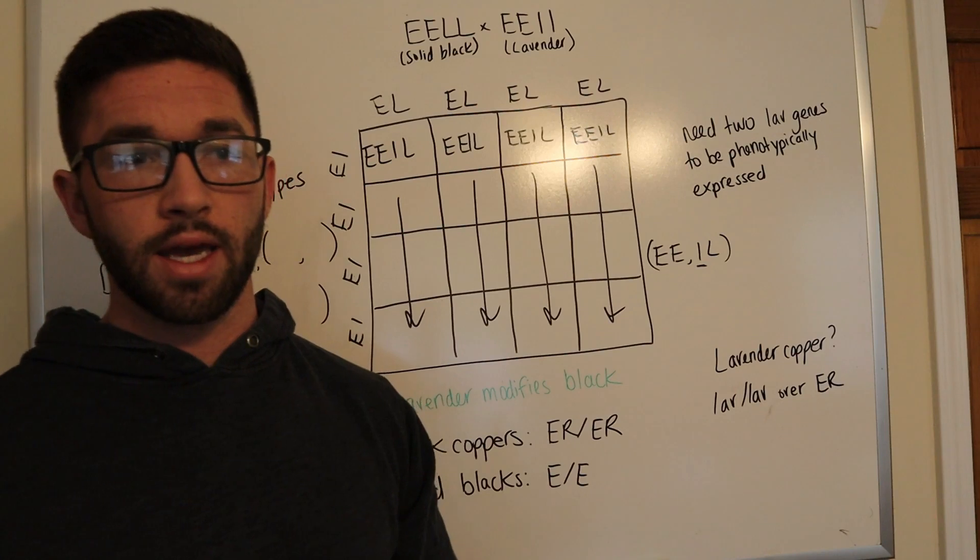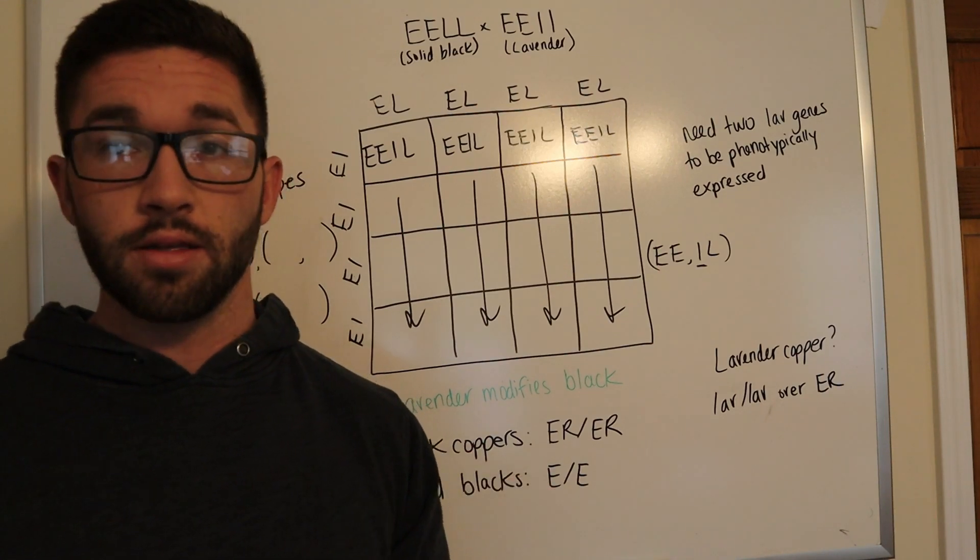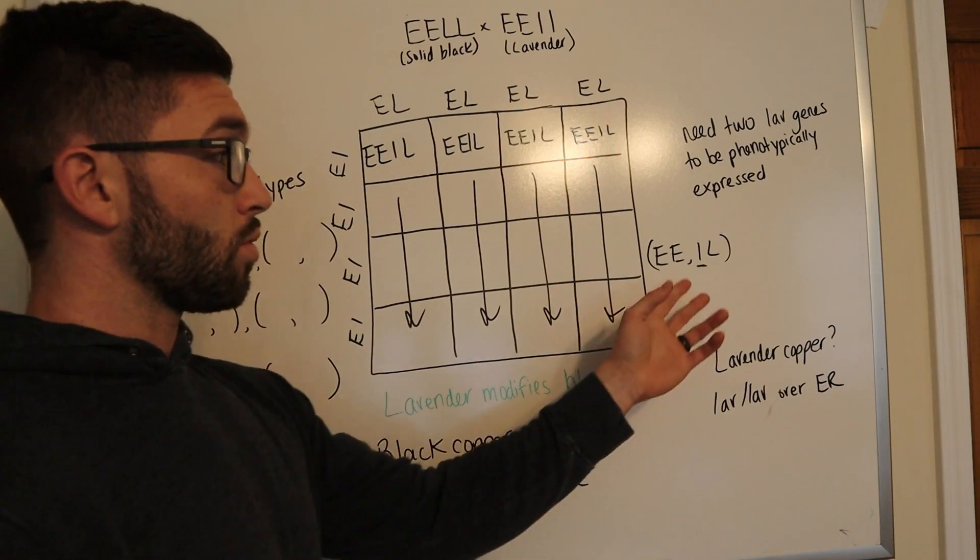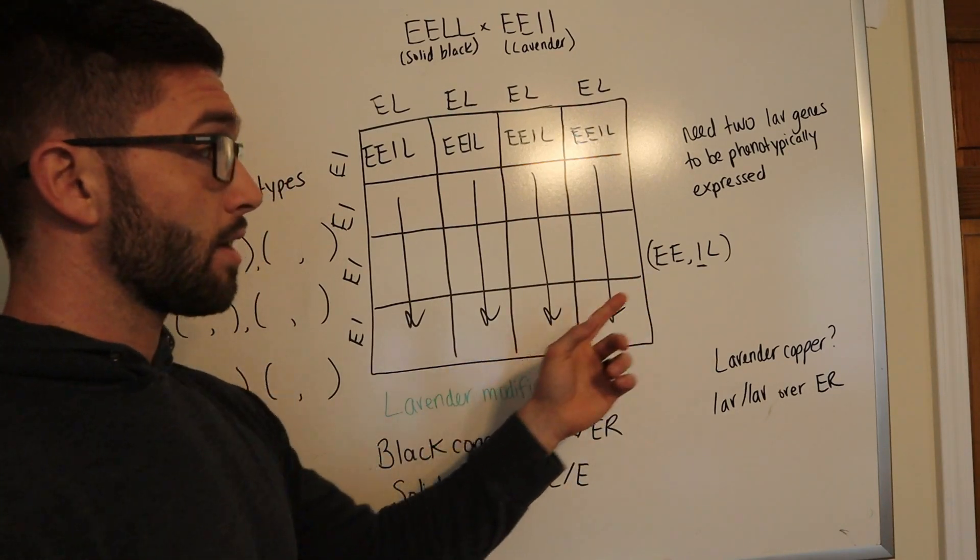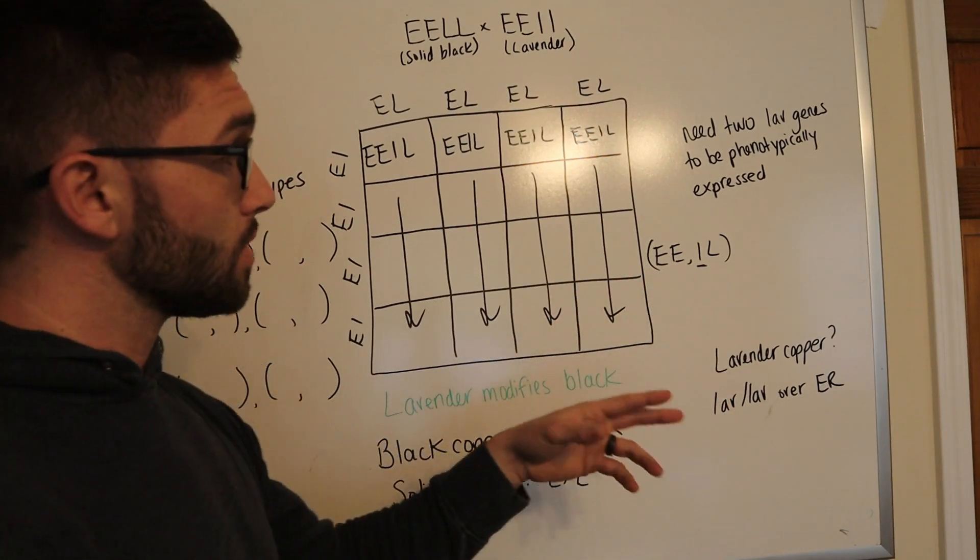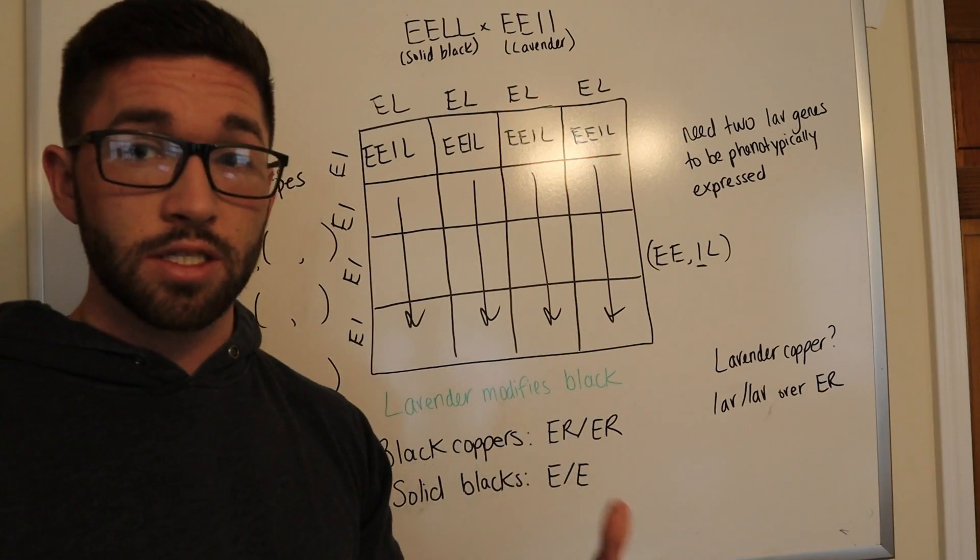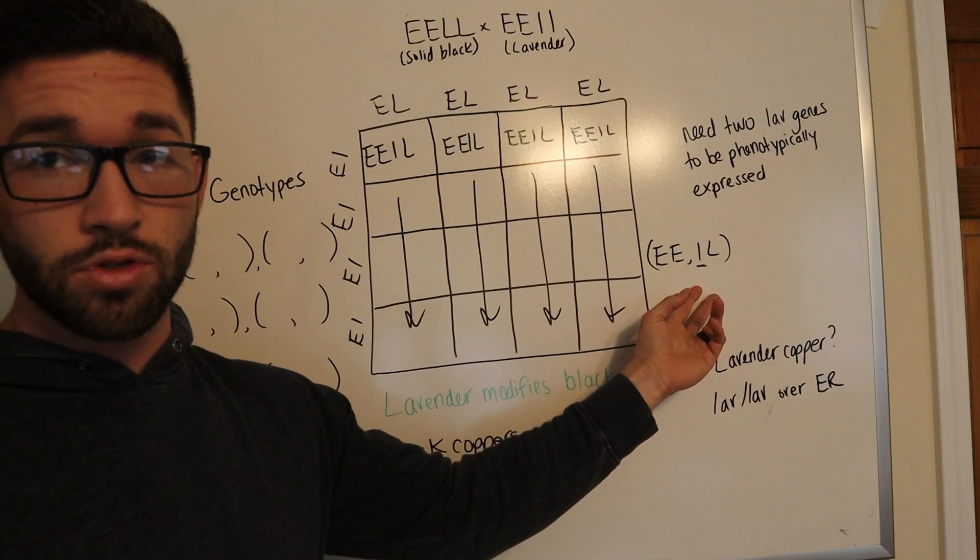And so phenotypically, again, means that you can visually see it. And the genotype is something that you can't see. It's the genetic makeup. So all of these crosses carry one lavender gene. And so they come off as black because they're not being phenotypically expressed because they don't have two lavender genes.